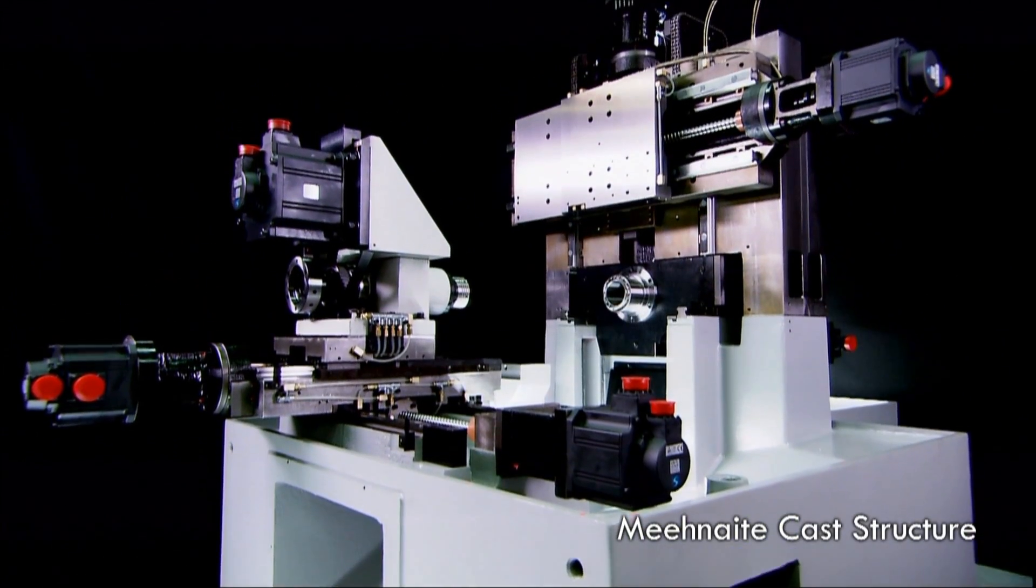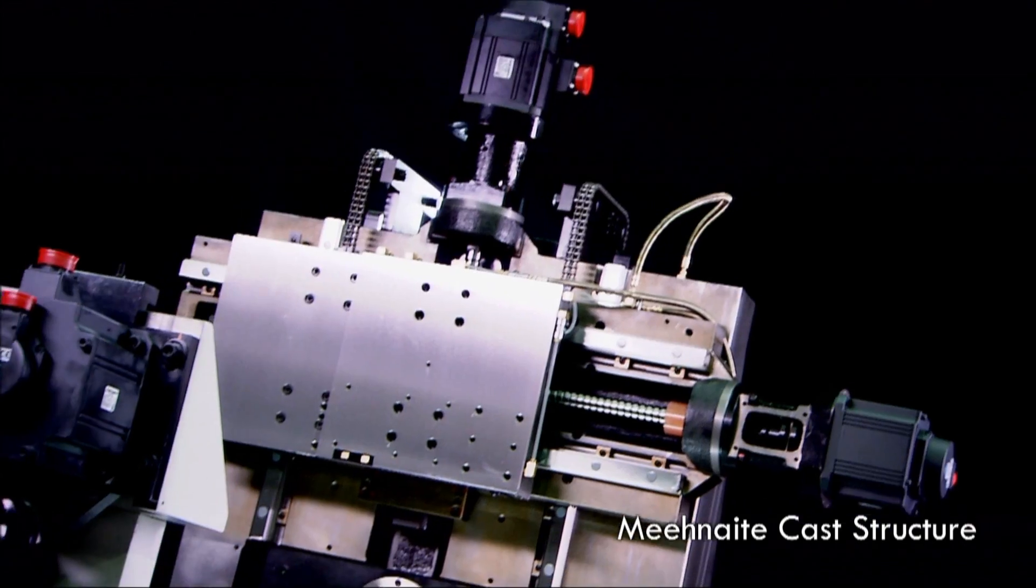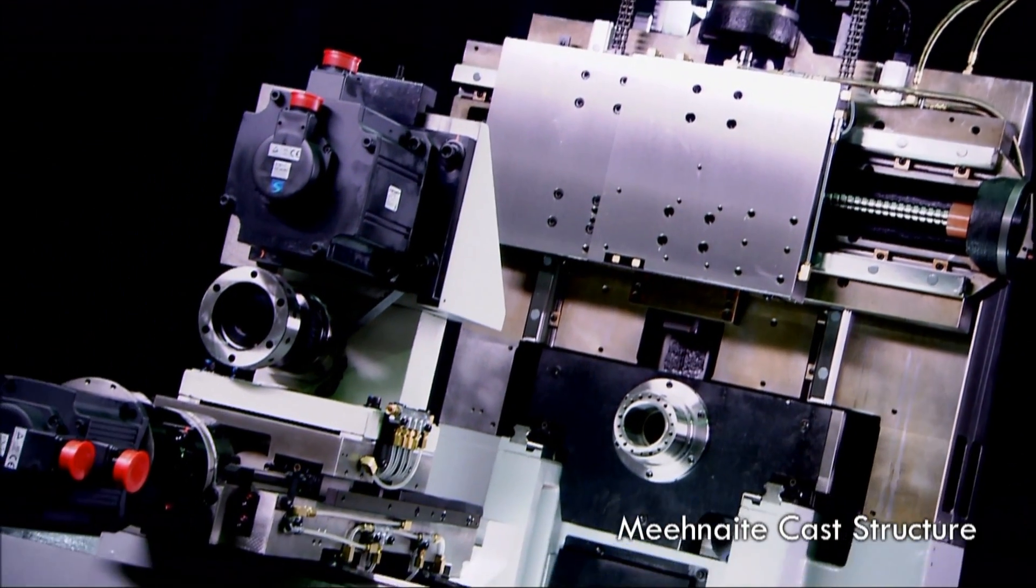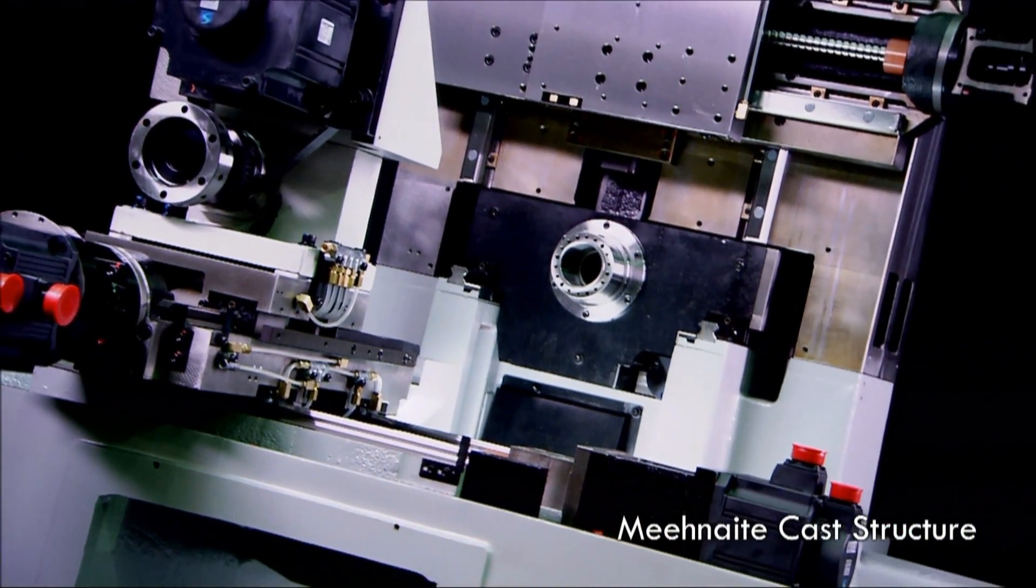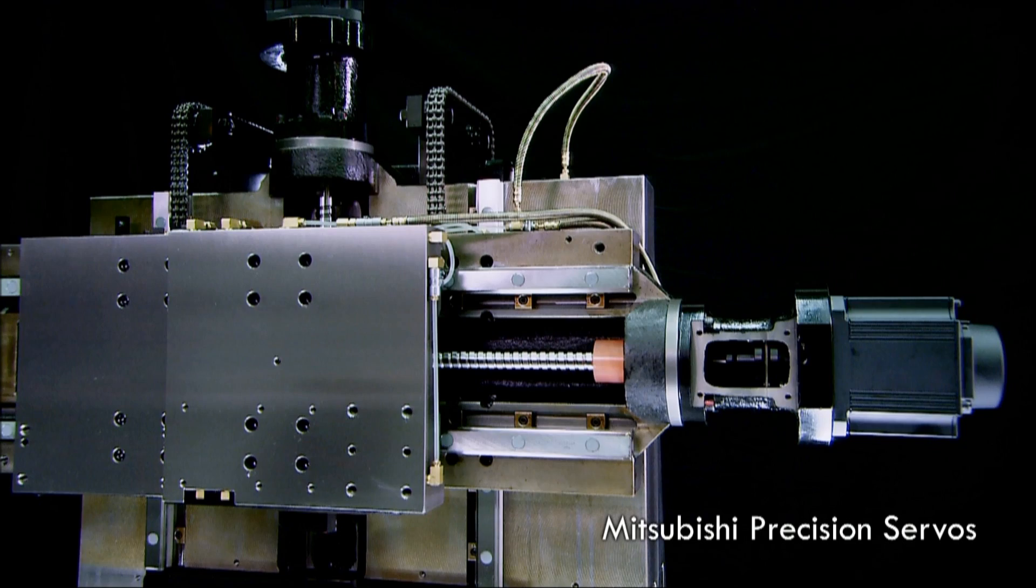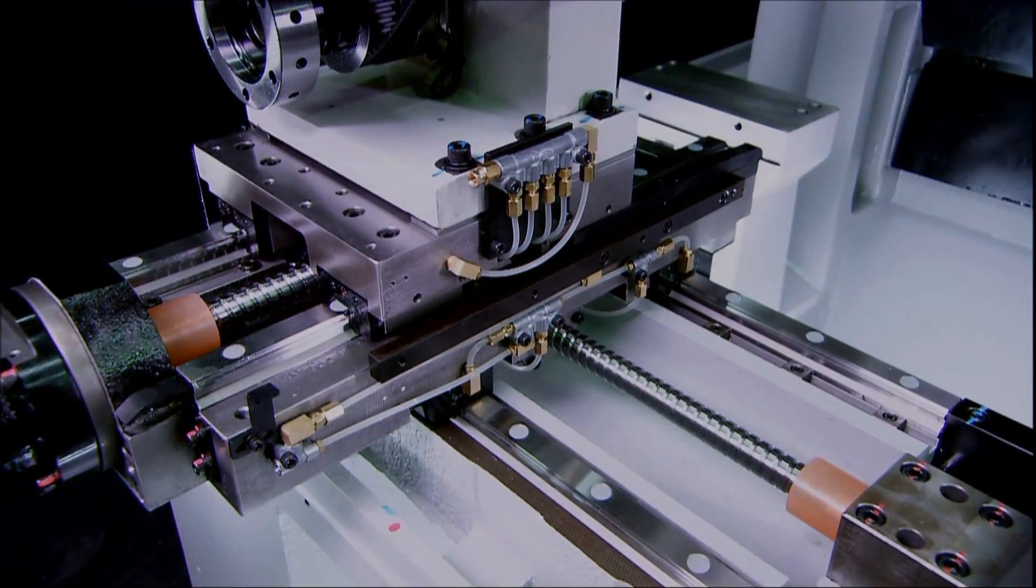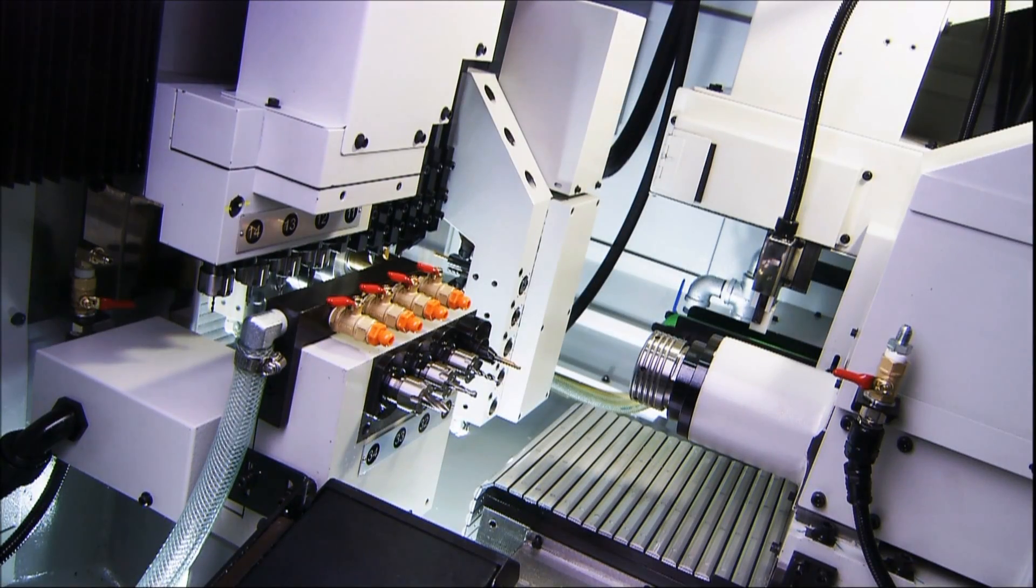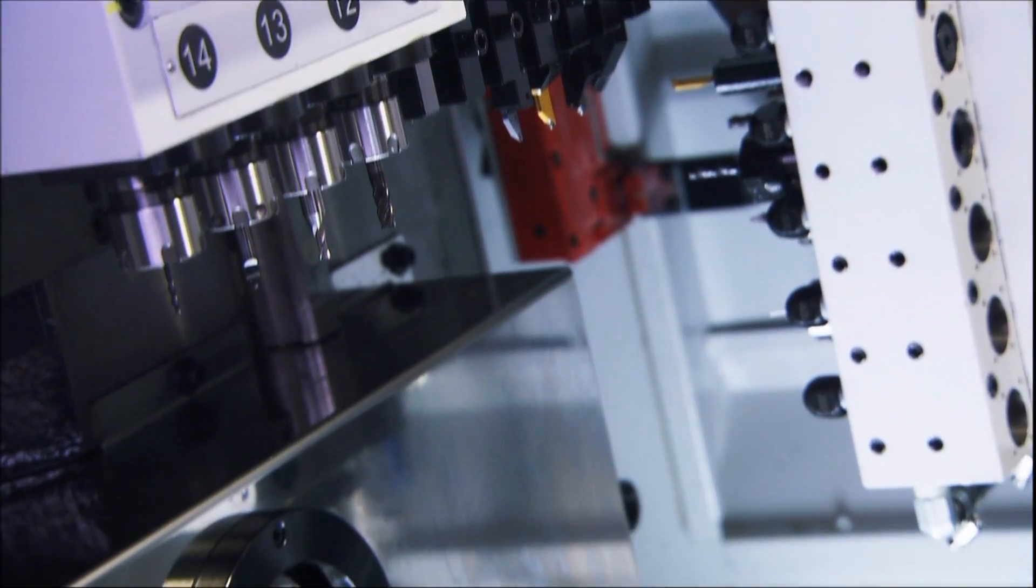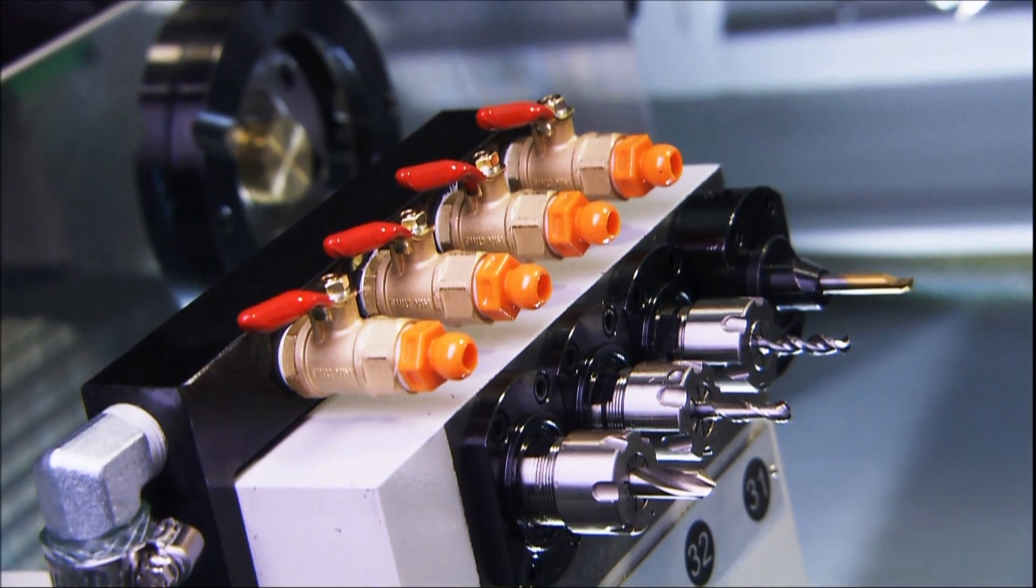This machining center uses the very best materials in construction: a Meehanite one-piece cast frame for guaranteed rigidity, Mitsubishi servo motors for machining precision, and THK linear guideways. It is especially good for short, complex work due to the independent spindles and fully driven tools.